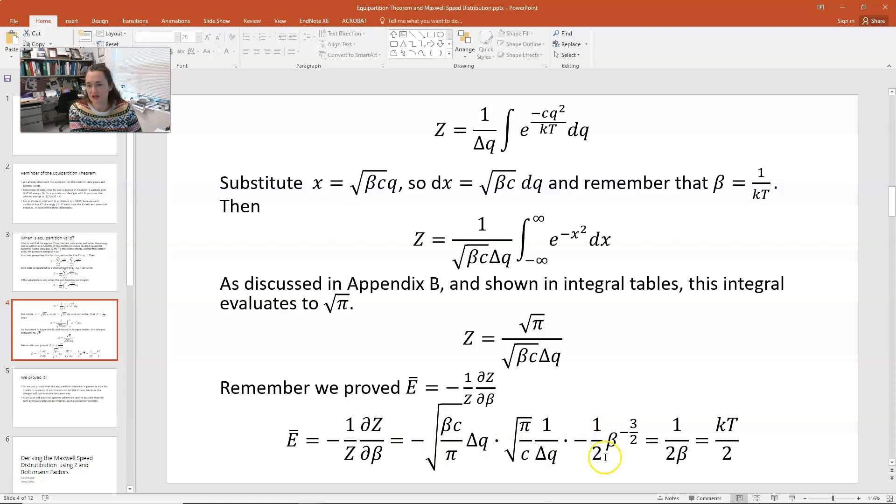And then we have left a 1 half, a beta to the minus 3 halves, and a beta to the 1 half. When you multiply those things through, you get 1 over 2 beta, and that is kt over 2. We just proved it. So if you can write your energy as a constant times some quantity that you're dealing with squared, like 1 half mv squared, 1 half kx squared, if you can write it in that way, then that means that for every direction that you can write that, you get kt over 2 of energy, the equipartition theorem.